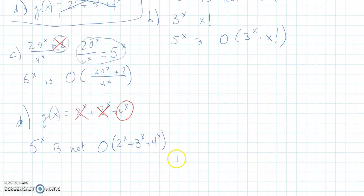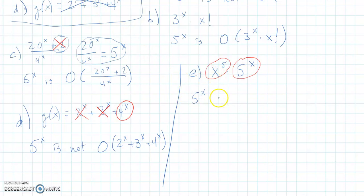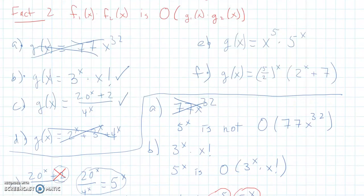Now let's look at x to the 5th times 5 to the x. This would be part e. So we have x to the 5th multiplied by 5 to the x. Well, this is two functions multiplied together. So the big O bound would be the product of whatever bounds them. Well, but look, one of the terms here is 5 to the x. And 5 to the x does grow as fast or faster than 5 to the x. And then I'm multiplying it by something to make it even a little bit bigger. So that means 5 to the x is big O of x to the 5th times 5 to the x. So that one checks out.